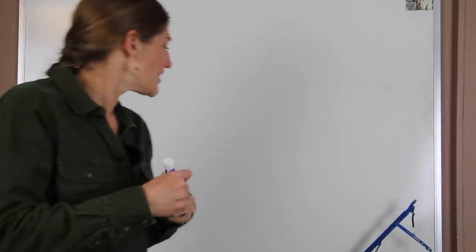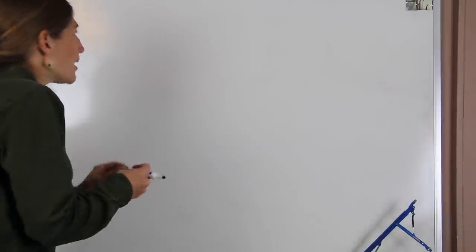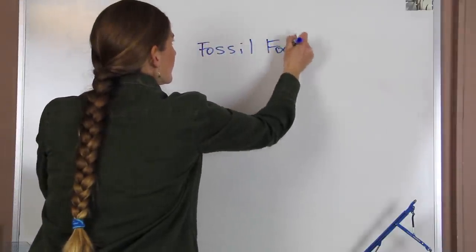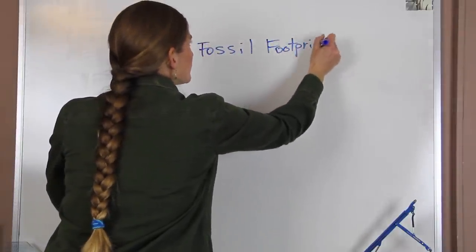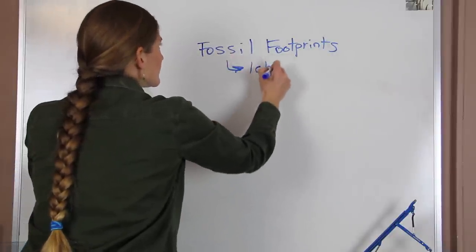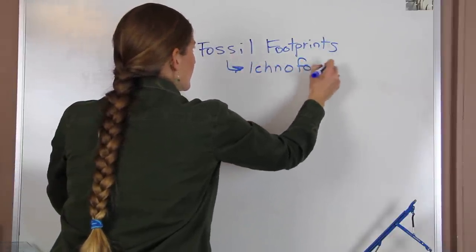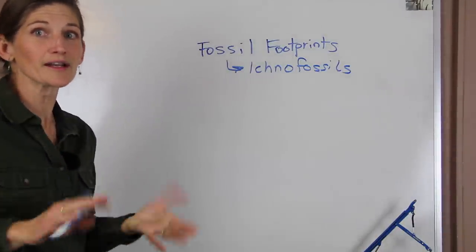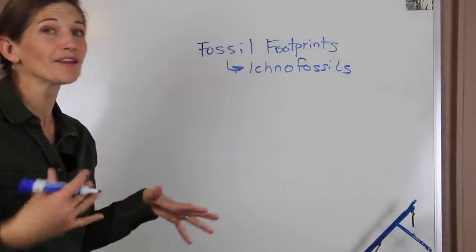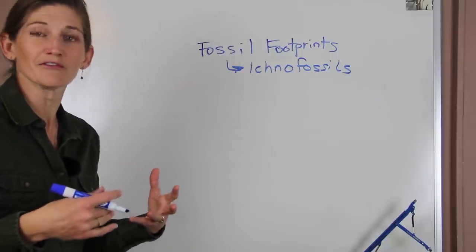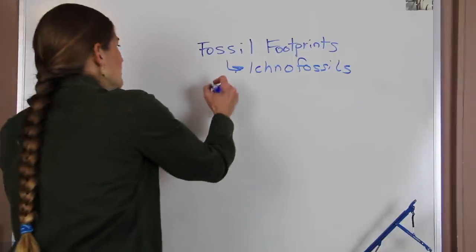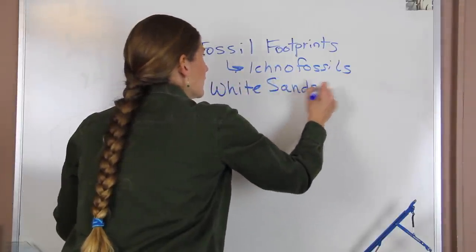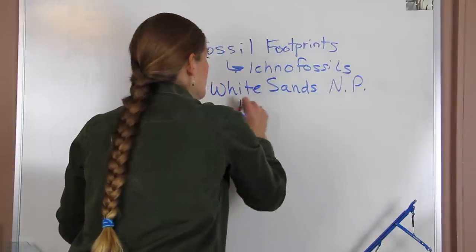The study I'm talking about revolves around some fossil footprints. These are ichnofossils, which means they're track fossils - they're not fossils of the actual organism but fossils that are left behind showing that the organism was moving through an environment. These were found in White Sands National Park in New Mexico in the U.S.